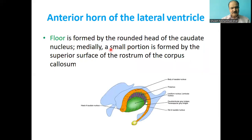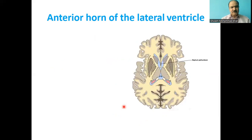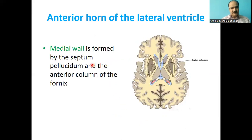The floor of the anterior horn is formed by the rounded head of the caudate nucleus, and a small portion is formed by the superior surface of the rostrum of the corpus callosum. The medial wall is formed by the septum pellucidum and the anterior column of the fornix.